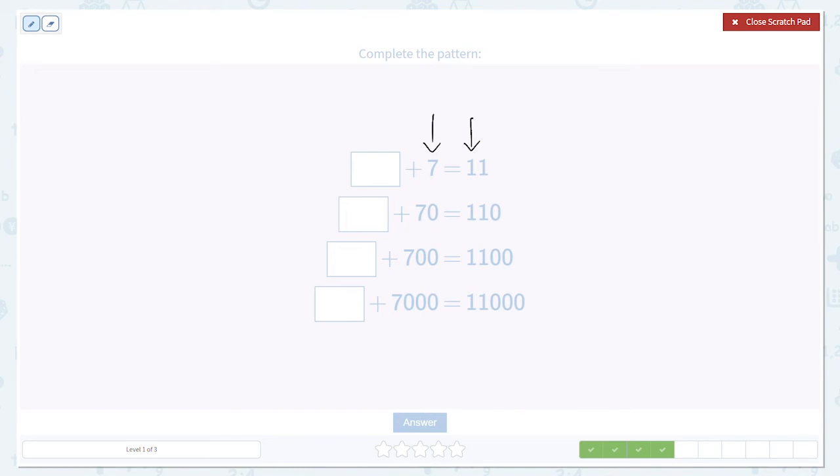But adding zeros still works. So all we do is we keep adding zeros. Let's see what goes in this first box: a 4, because 4 plus 7 is 11. Now we know what to do. Just add zeros to the 4 to fill out the rest of the boxes. So 4, 40, 400, and 4000.